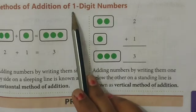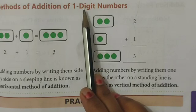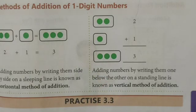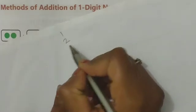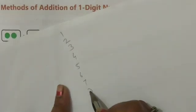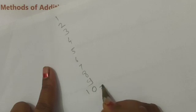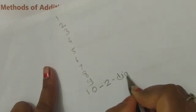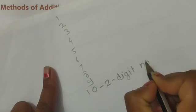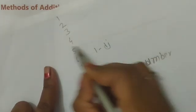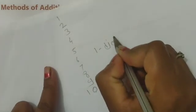Here we see one digit numbers — that means numbers with only one digit. From number 1 to 9, these are all one digit numbers because each has only one digit. For example: 1, 2, 3, 4, 5, 6, 7, 8, 9 — these are all one digit numbers.